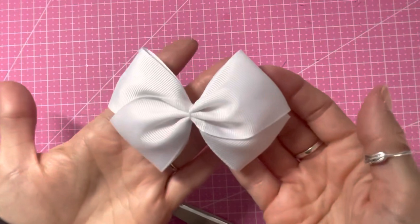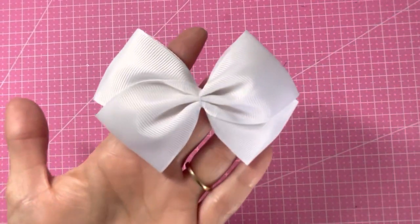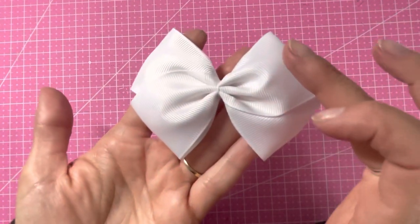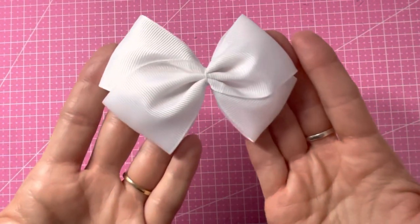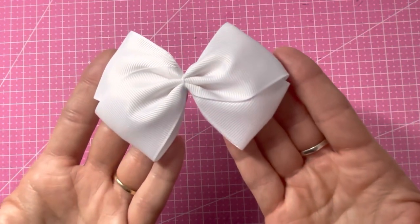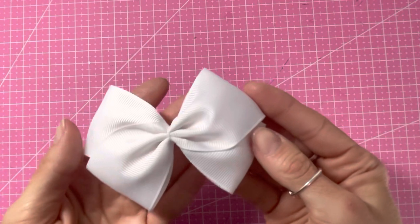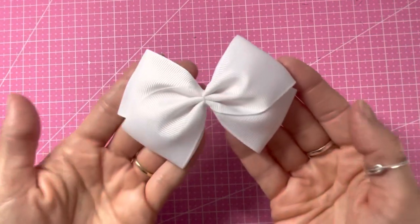And then like I said you can then add a clip to this in a center and use that as a bow as it is. You could use two different colors of ribbon so it does make a nice hair bow as it is, but this particular one is what I'm going to be using as a base bow. I'll pop a link for a tutorial here where I use this as a base bow as an example.